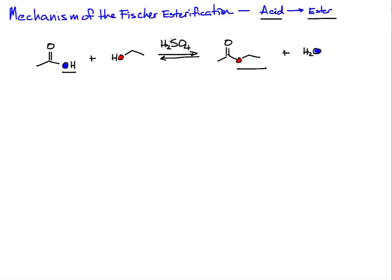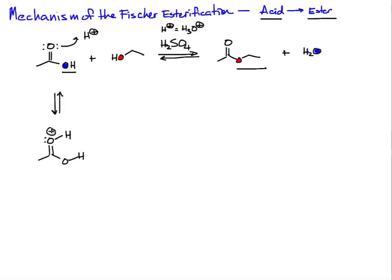We're under acidic conditions, so we have sulfuric acid, which I'll represent as H+ or specifically hydronium, H3O+, using those as pretty much equivalent. The first step in this mechanism is to protonate the carbonyl oxygen to activate it for attack by the ethanol nucleophile. This reaction is run under equilibrium conditions. When we protonate the carbonyl oxygen, the positive charge resides on that oxygen.